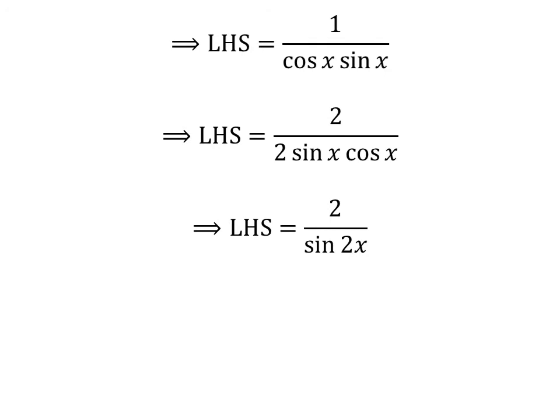We know 2 times sin of x times cosine of x is equal to sin of 2 times x. Thus the left hand side of the identity is equal to 2 upon sin of 2 times x.